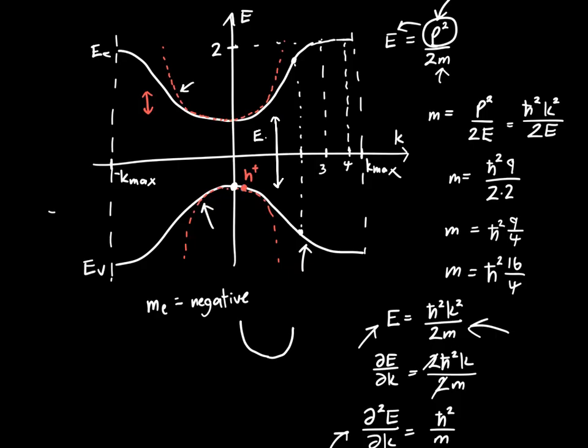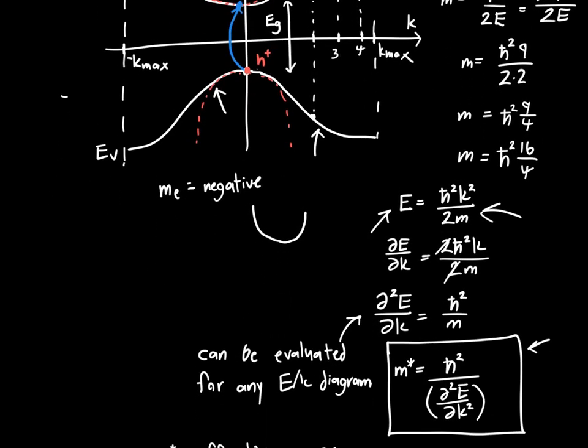This is the bandgap energy, E_G. So this is the energy that it takes an electron to break its bond with the atoms that it was connecting and become a hole. This bandgap energy is the amount of energy it takes an electron to jump up into the conduction band. And in doing so, we have one electron we can use to conduct electricity and one hole we can use to conduct electricity.